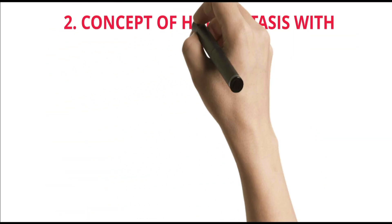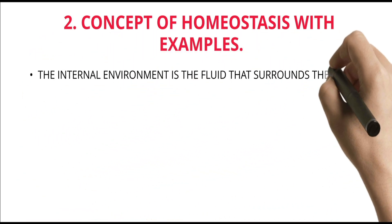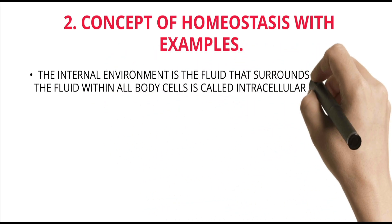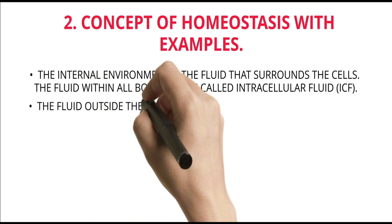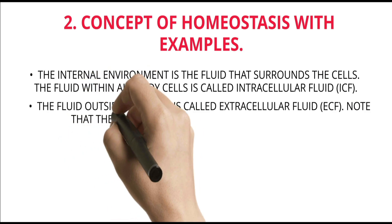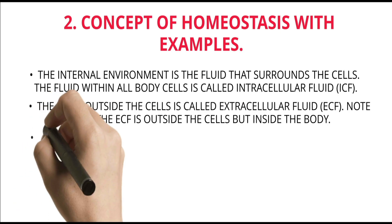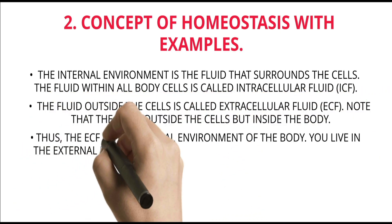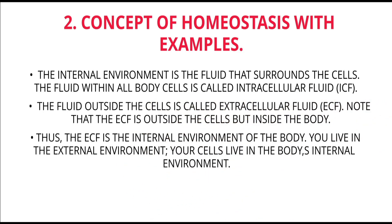Concept of homeostasis with examples: The internal environment is the fluid that surrounds the cells. The fluid within all body cells is called intracellular fluid, or ICF. The fluid outside the cells is called extracellular fluid, or ECF. Note that the ECF is outside the cells but inside the body. Thus, the ECF is the internal environment of the body. You live in the external environment; your cells live in the body's internal environment.